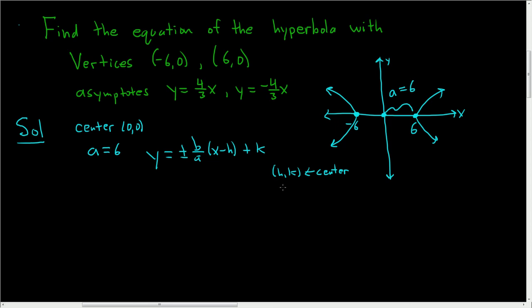But in this case the center is 0, 0 as we've already seen over here. So h is 0 and k is 0, so we just end up with y equals plus or minus b over a times x.